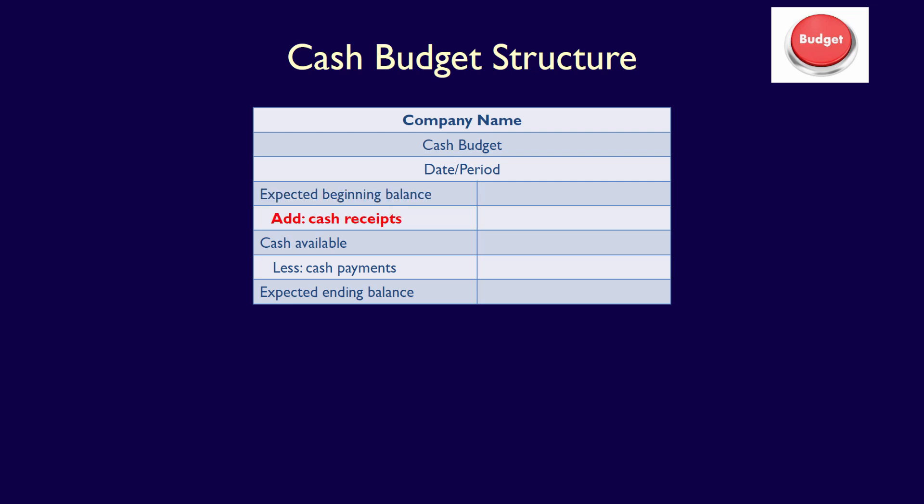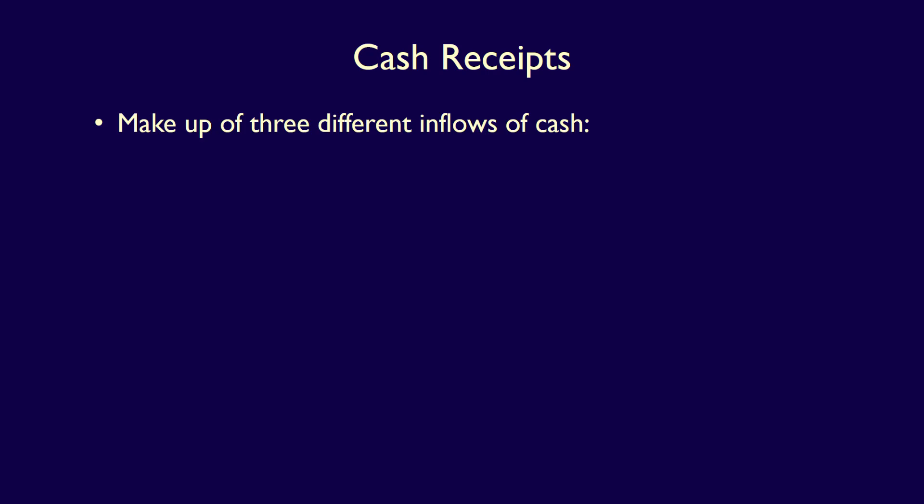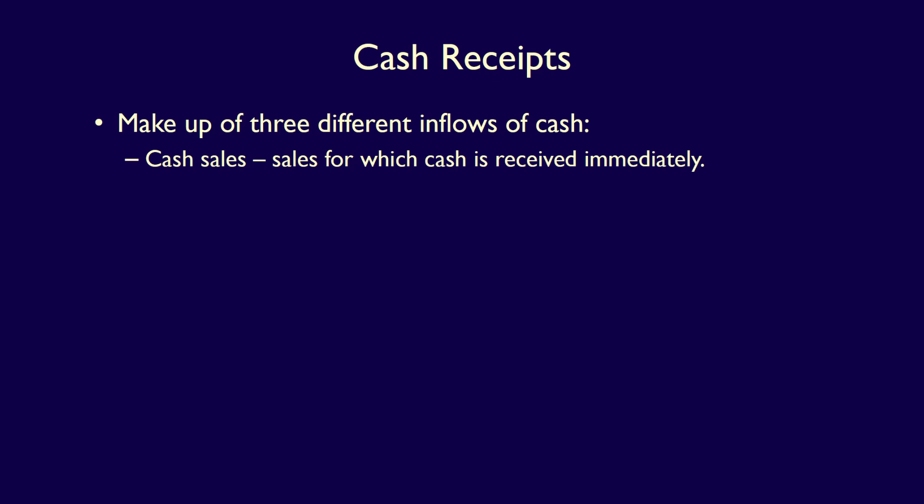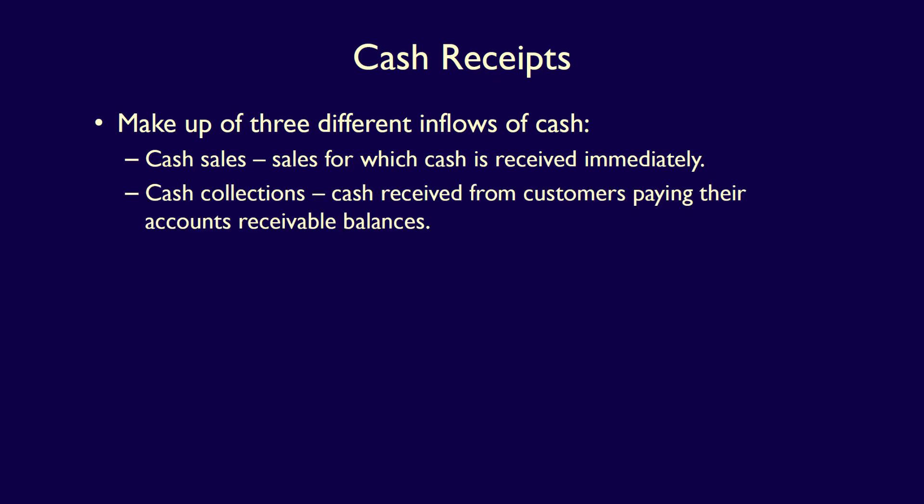How do we determine cash receipts? Cash receipts are the cash the organization expects to receive during the period from outside sources, and they are made up of three different inflows of cash. First, cash sales made to customers — if an organization has cash sales where cash is received immediately, that's a cash sale. An example would be when a wholesaler sells a product and the customer pays cash. Second is cash collections: this is when an organization sells on account and records an accounts receivable, and cash collections are when customers pay their outstanding accounts receivable balances.